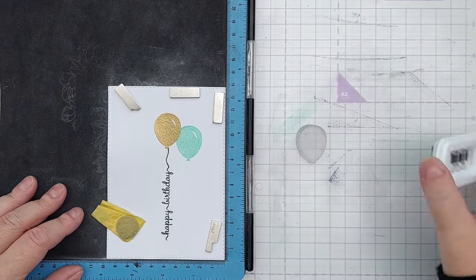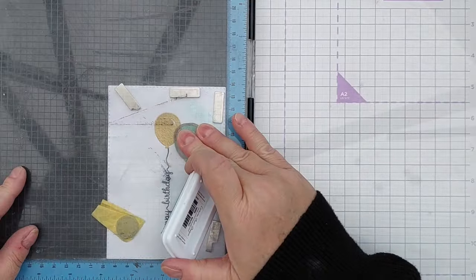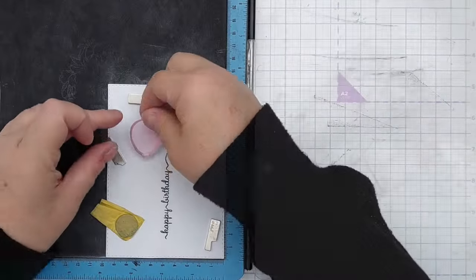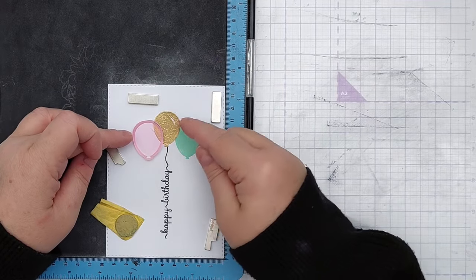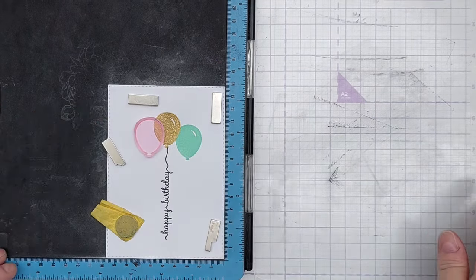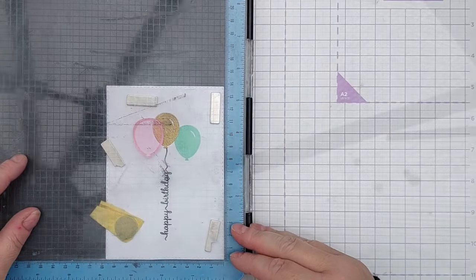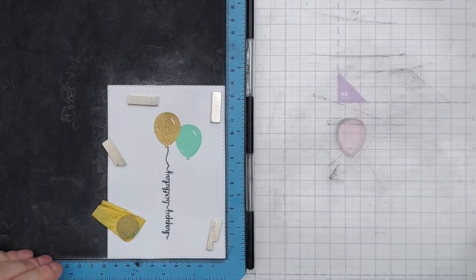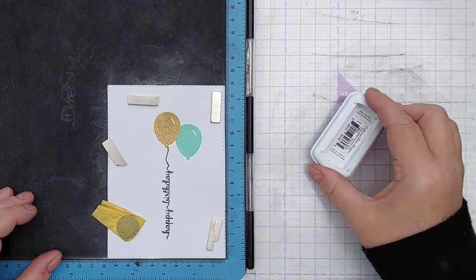I use Catherine Pooler dye inks because they're translucent, they layer nicely over each other, you can see through the top one to the one below so you get a nice layering effect which I think is good for balloons because quite often they are translucent to some degree.